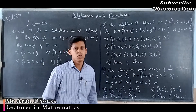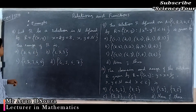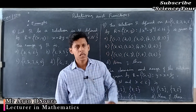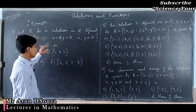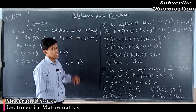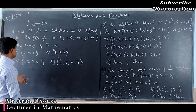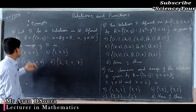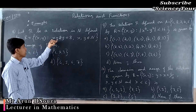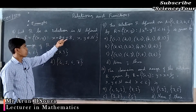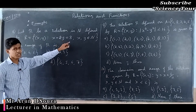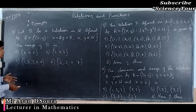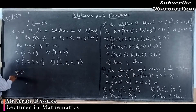Welcome to CTTE classes of Relations and Functions. We have already solved questions on Cartesian products and relations and will continue solving questions connected to the concept of relations. Let R be a relation in ℕ defined by R = {(x, y) : x + 2y = 8}. Here we need to find the range.